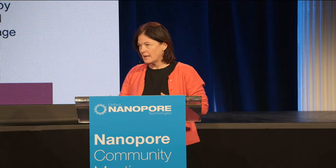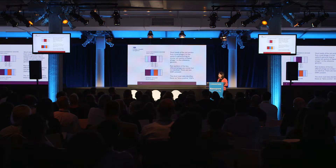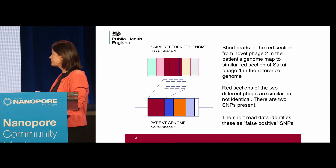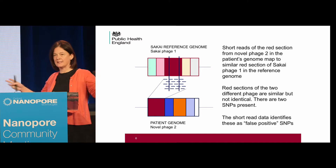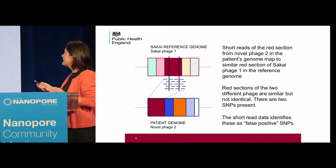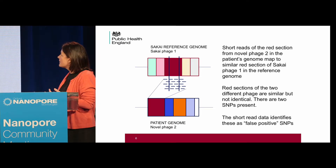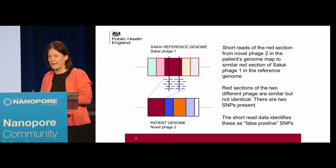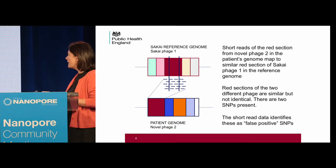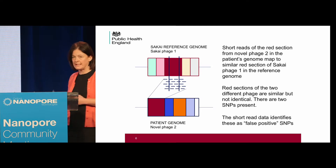This represents a prophage in the patient genome, and this represents a prophage in the reference genome. The long-read technology spans the whole prophage region and recognises that they're different. But with short reads — for example in the red section — reads from part of the patient's phage map to a similar section in a different prophage. The regions are similar but not identical, so the methodology called SNPs in that data. We're suggesting these are arguably false positives in the Illumina data.